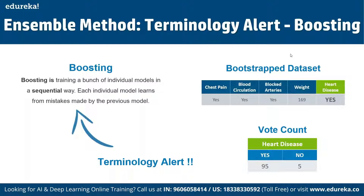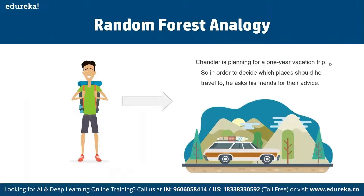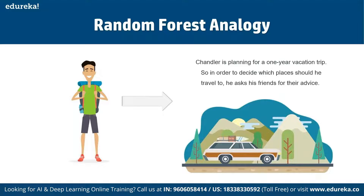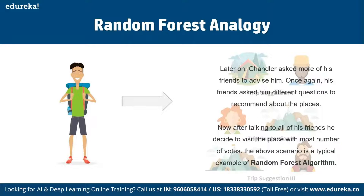Here is the Random Forest analogy: Chandler is planning a one-year vacation trip and asks his friends for advice. Each friend suggests different destinations — one recommends trekking, another hiking, and so on — each based on different questions. Chandler consults multiple friends, each recommending places based on different criteria. Finally, Chandler decides to visit the place with the most votes. This is a typical example of the Random Forest algorithm.